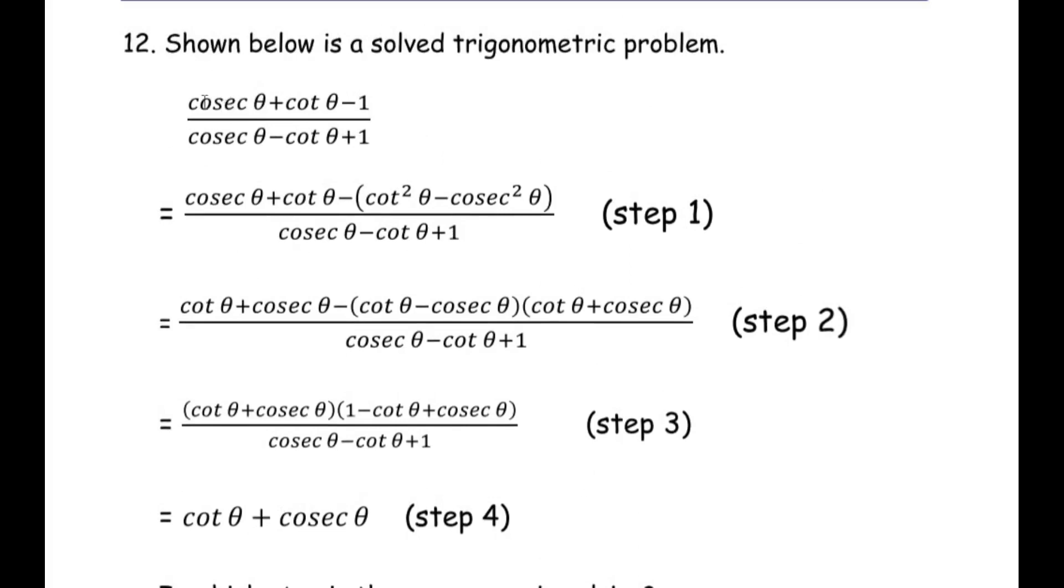Now since this is the question cosec theta plus cot theta minus 1 over cosec theta minus cot theta plus 1, what they have done in the first step is cosec theta plus cot theta in the numerator, they have written it the same. But in place of negative 1, they have written cot square theta minus cosec square theta. Now this is the only change they have done in the first step with respect to the question. You can see the denominator is also same.